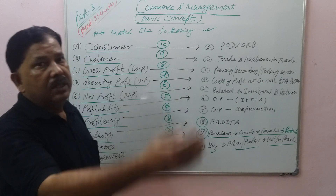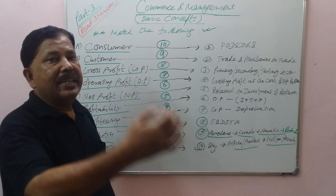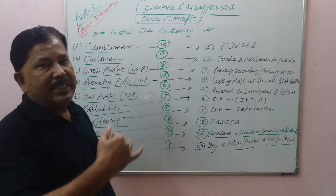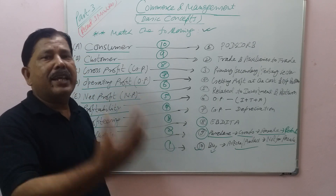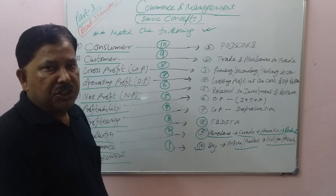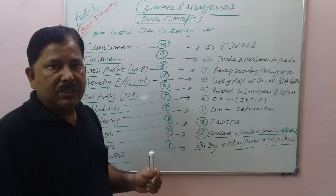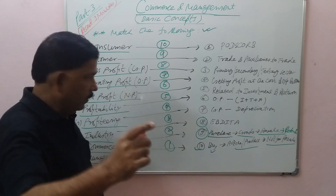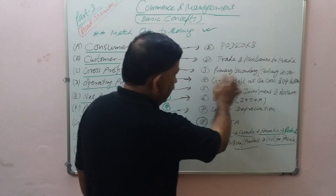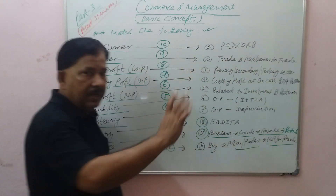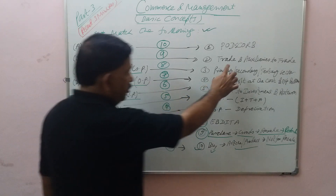Profiteering means getting profit at the cost and expense of others — through illegal or unfair means, taking undue advantage during emergencies such as war, COVID, pandemics, endemics, earthquakes, or droughts by raising prices and hoarding goods and services. Industry is related to the primary sector, secondary sector, and tertiary sector — complete details are in that video.